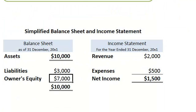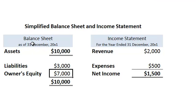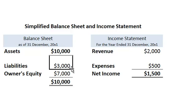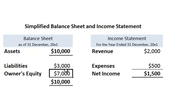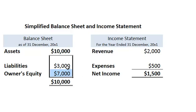In a simplified example: on the balance sheet, if assets are 10,000 — which can include cash — and liabilities, such as debt, are 3,000, then owner's equity is the residual: 10,000 minus 3,000 equals 7,000. This ensures that the left-hand side, assets of 10,000, necessarily equals liabilities of 3,000 plus owner's equity of 7,000. That's the balance in the balance sheet.